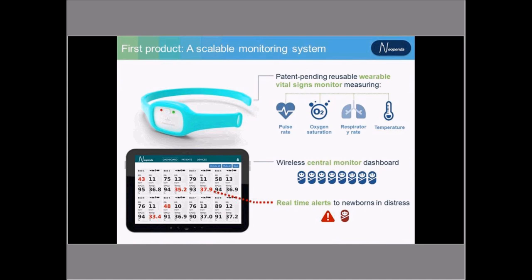That's exactly what we're doing. We've created a patent-pending wearable vital signs monitor that continuously measures four different vital signs: pulse rate, respiratory rate, blood oxygen saturation, and temperature — all in a simple headband or armband. The vital signs from all of these devices wirelessly connect to a centralized dashboard on a single tablet. A nurse can efficiently view the health status of all the babies in the room just by looking at one screen. And if any baby's vital signs go outside of the healthy range, a nurse is immediately alerted so she knows where to direct her attention most efficiently.